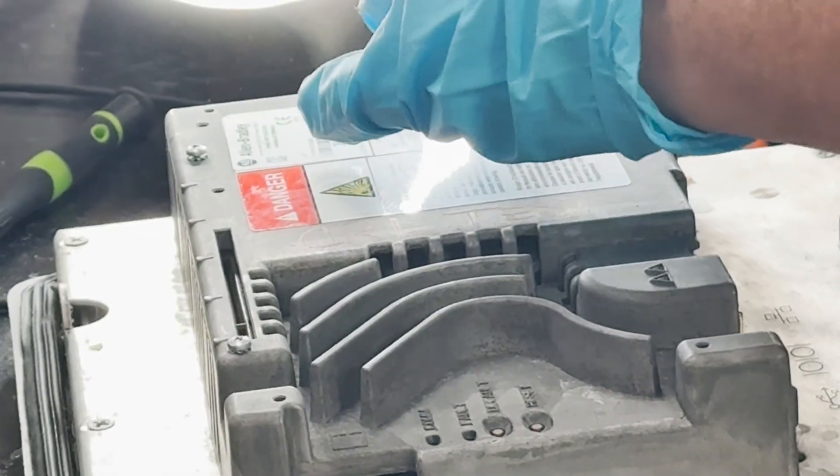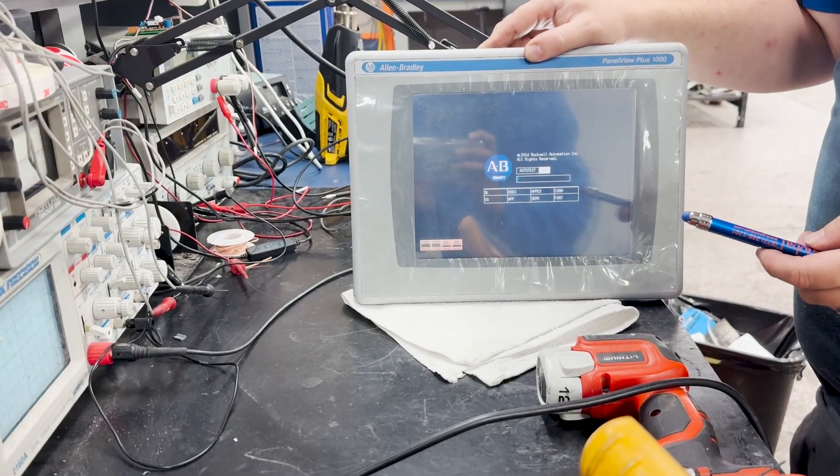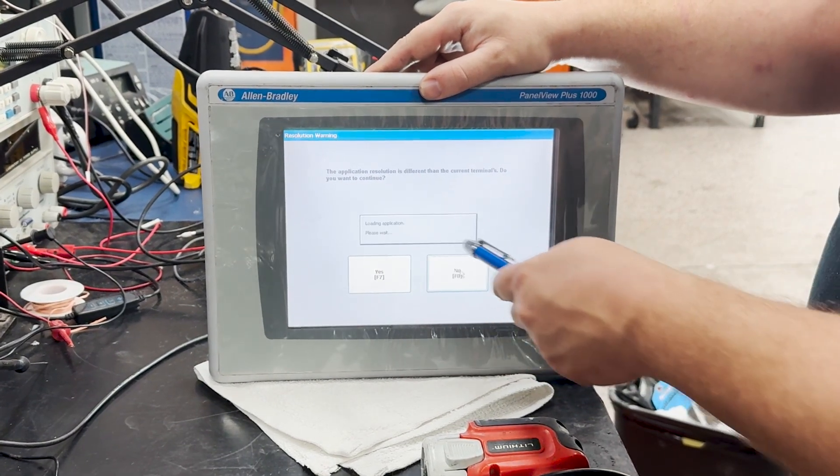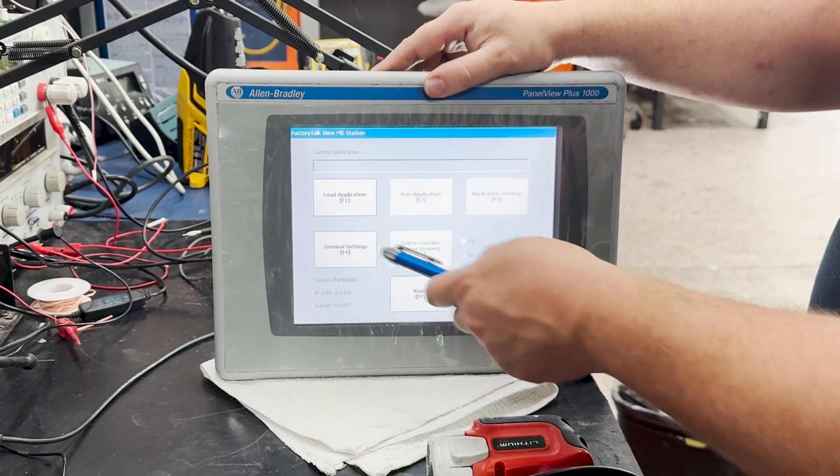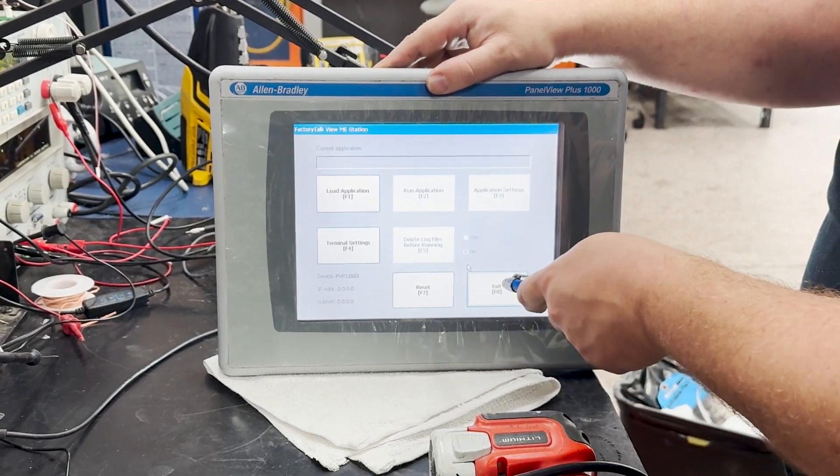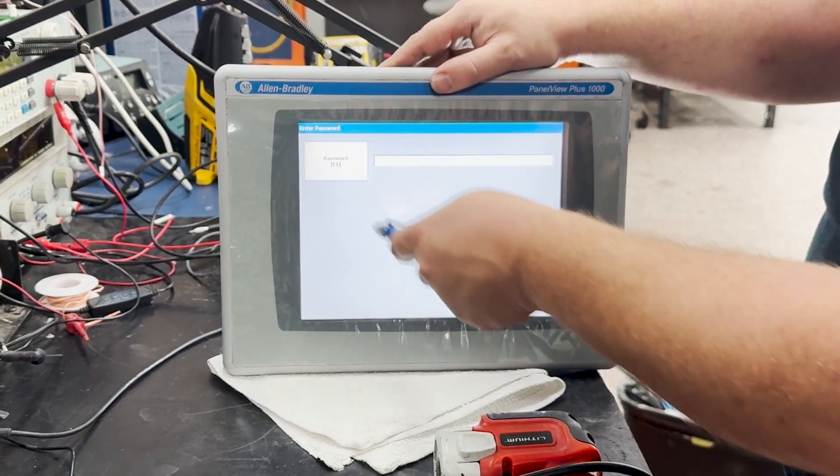The repair process is now complete. We will conduct a comprehensive test of the touchscreen's capacitive sensing layer to verify its responsiveness and accuracy. As observed, the touchscreen is now fully functional. The repaired unit will be packaged securely and shipped to the customer within one to two days, enabling a swift return to full operational capacity.